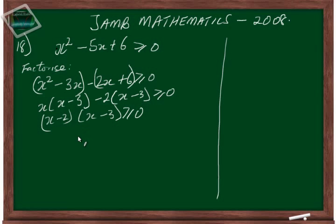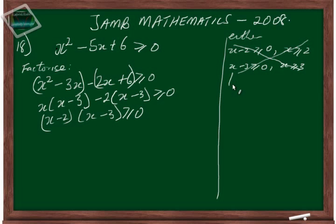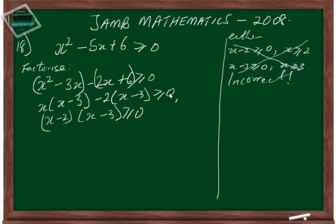Now at this point, a lot of students tend to make a common mistake where they just equate each factor to zero and say x minus two is greater than or equal to zero, so x is greater than or equal to two, and x minus three is greater than or equal to zero, so x is greater than or equal to three. This is wrong. If you have a quadratic equation, yes, you can do this — but this is a quadratic inequality problem, and solving it like this does not satisfy the inequality.